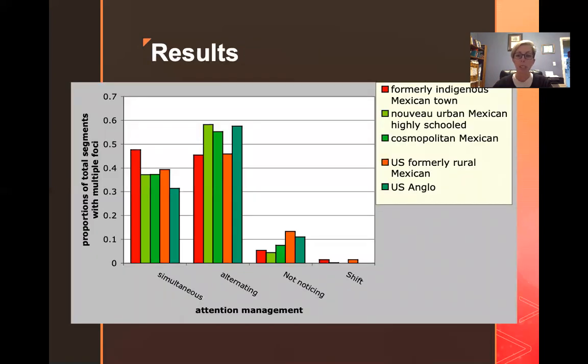So an example from research that I've done, looking at attention in different cultural communities, here's my graph. So I color coded the groups that I anticipated in my hypothesis were going to go together. So this was an ANOVA that was done here, comparing across these four groups.